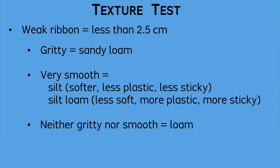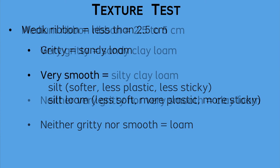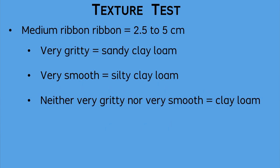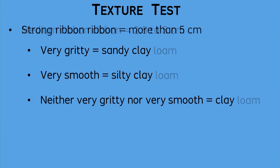The weakest ribbon with the grittiest texture would be a sandy loam. The next categories of loamy textures can be identified in gradations of their relative amounts of sand, silt, or clay. The strongest ribbon with the smoothest texture would be a purer clay.